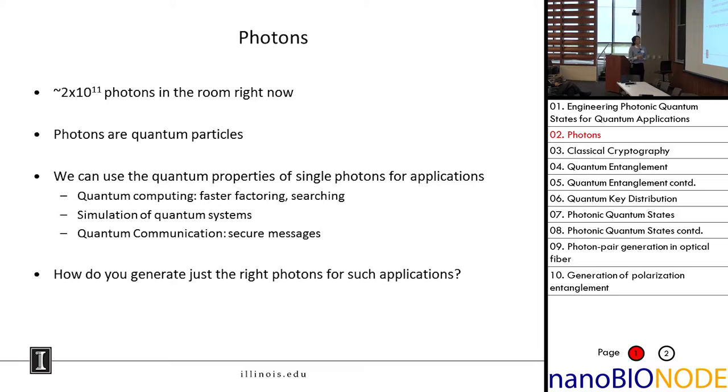Possible applications are in computing - we can do faster factoring and searching of large databases. We can use photons to simulate quantum systems that would be difficult to understand using classical techniques. And we can use them for communication. Photons move at the speed of light, they're robust against environmental fluctuations, and using single photons we can send perfectly secure messages.